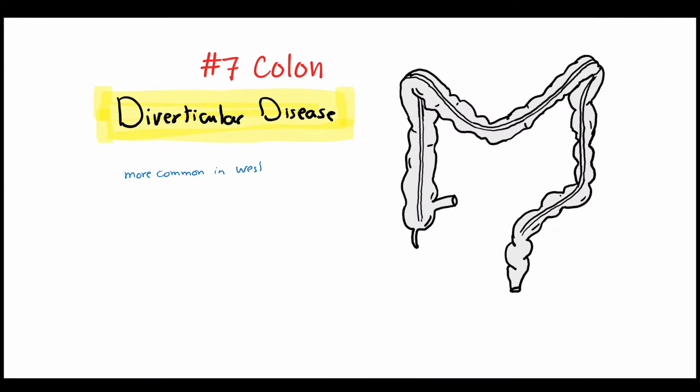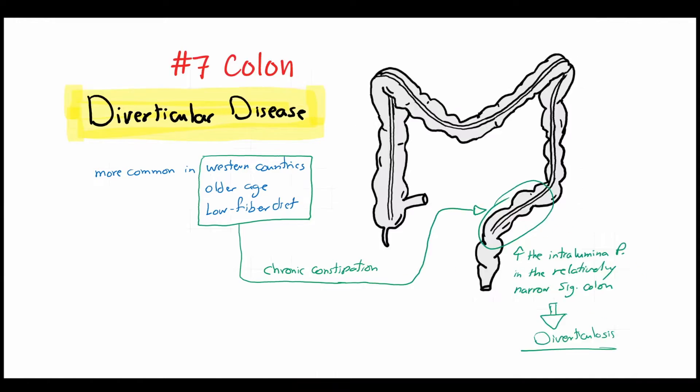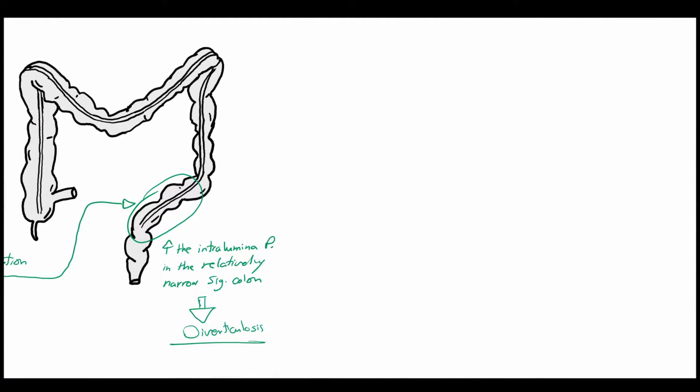Diverticular disease of the colon is more common in western countries, older age, and low fiber diet, which are all factors leading to chronic constipation. Chronic constipation in turn leads to increased intraluminal pressure in the relatively narrow segment of the colon, which is the sigmoid colon. This leads to the formation of diverticulosis.